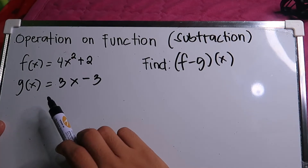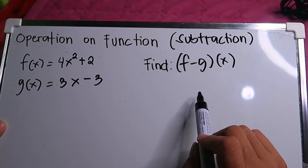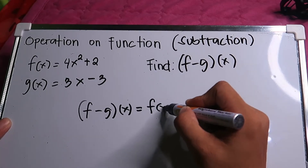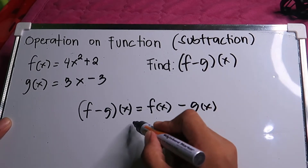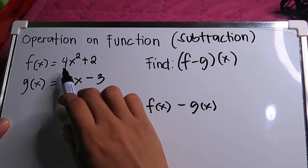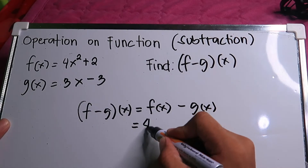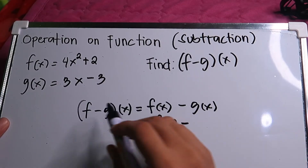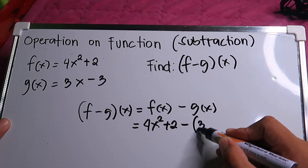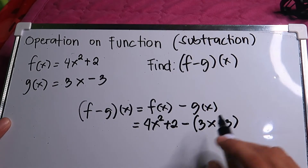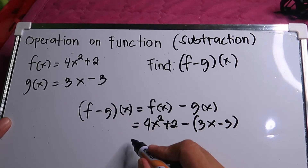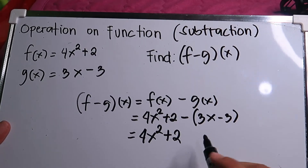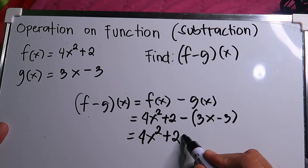Operation on functions — subtraction, second example. We have f(x) equal to 4x squared plus 2 and g(x) equal to 3x minus 3. Find the quantity of (f − g)(x). So (f − g)(x) equals f(x) minus g(x). Substituting: f(x) has the function 4x squared plus 2 — copy that — then the minus sign, and g(x) is 3x minus 3, placed in parentheses so the original equation is not changed.